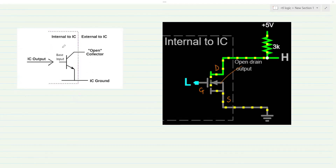There comes an output pin of the IC that is called IC output. And this IC output is going as an input to the base pin of the transistor. Here is a collector pin, here is a base pin, and here is an emitter pin of the transistor. What is to be noted here is that this is an NPN transistor as indicated by direction of current flow.